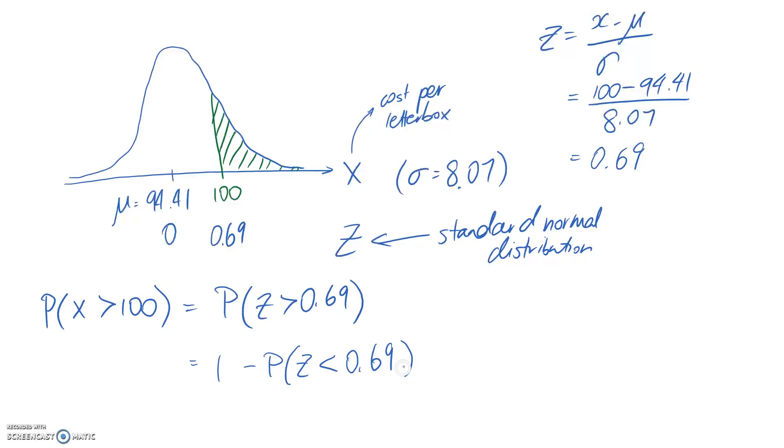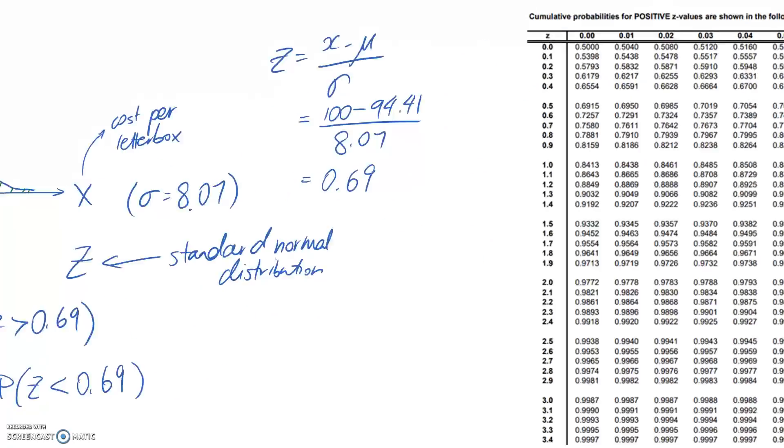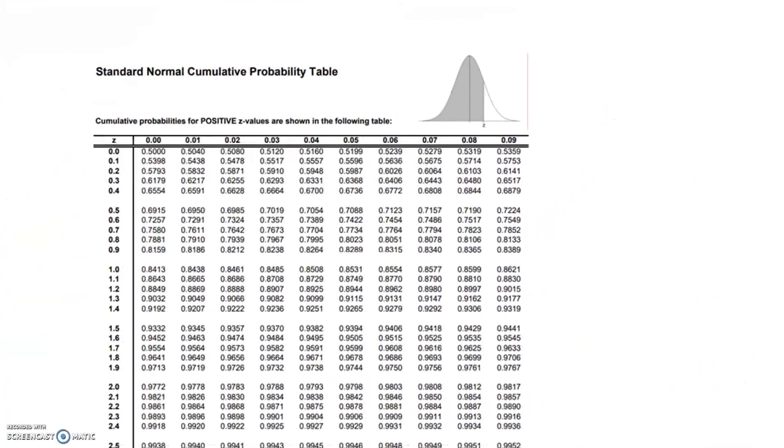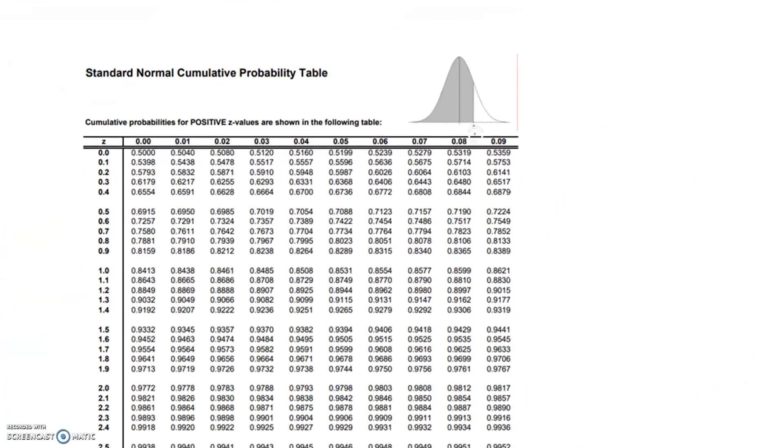Now this is something we should be able to look up in the table. Our z value here is 0.69, so we just need to look it up in the table.